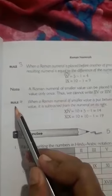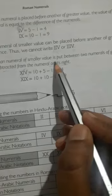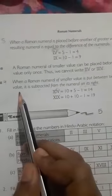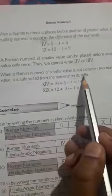Rule 4: When a Roman numeral of smaller value is put between two numerals of greater value, it is subtracted from the numeral on its right.